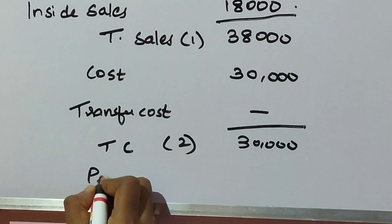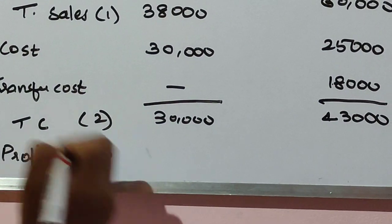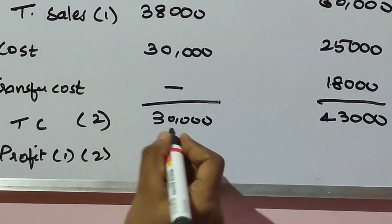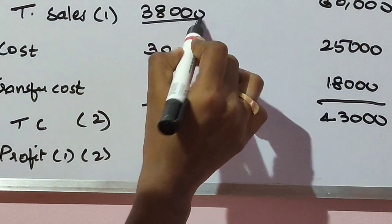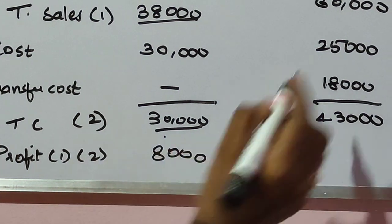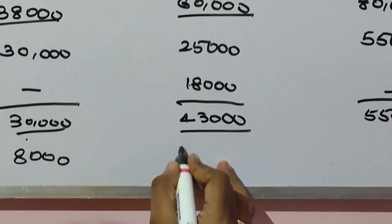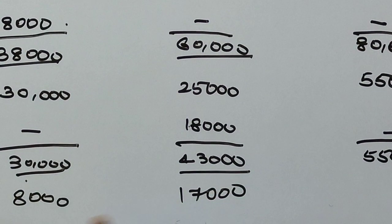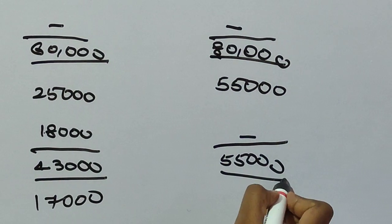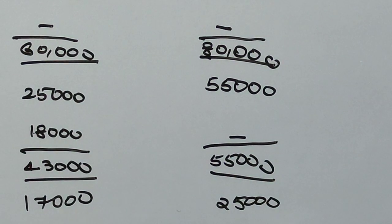Profit equals total sales minus total cost. X = 38,000 − 30,000 = 8,000. Y = 60,000 − 43,000 = 17,000. Company = 80,000 − 55,000 = 25,000.